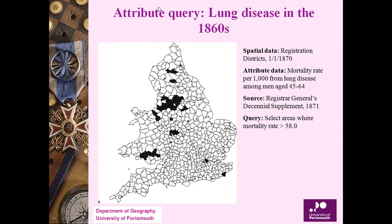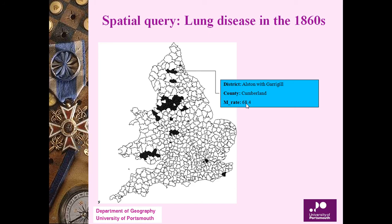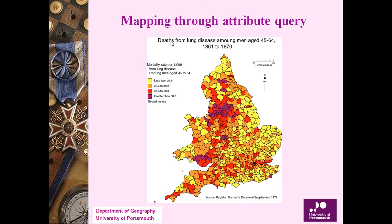An example: in the 1860s, lung disease was mapped using attribute queries. The spatial data shows registration districts; the attribute data shows mortality rate per 1,000 from lung disease among ages 55–60, sourced from the Registrar General's Decennial Supplement. The query 'select areas where mortality rate is greater than 58' returns results so easily — increase or decrease the number and you get different areas. This demonstrates the power of querying a GIS database.